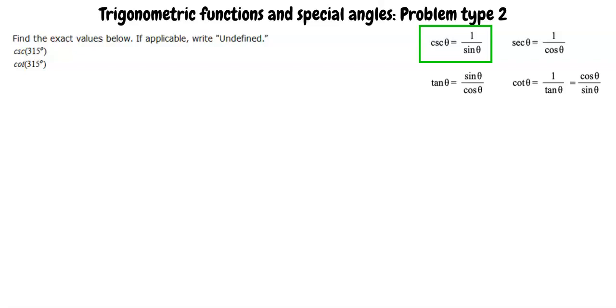This means that we can solve for cosecant of 315 degrees by first finding sine of 315 degrees, and then taking its reciprocal, since sine and cosecant are reciprocals.